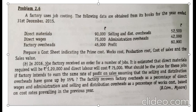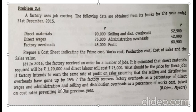Point B: in 2016 the factory received an order for a number of jobs. It is estimated that direct materials required will be 1,20,000 and direct labor will cost 75,000. What would be the price for these jobs if the factory intends to earn the same rate of profit on sales, assuming that selling and distribution overheads have gone up by 15 percent? The factory recovers factory overhead as a percentage of direct wages, and administration and selling overhead as a percentage of works cost, based on the cost rates prevailing in the previous year. This is similar to Problem 2.5.